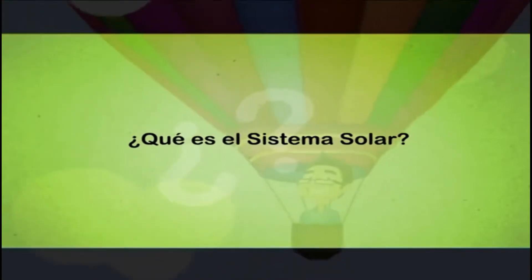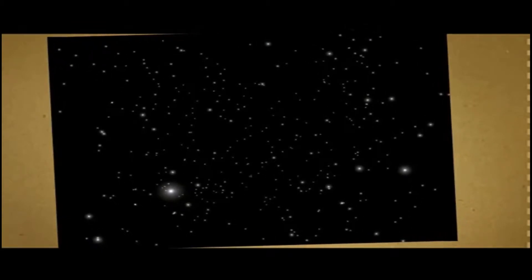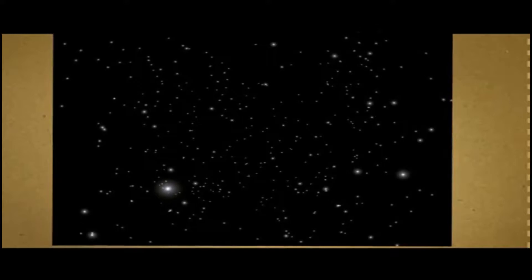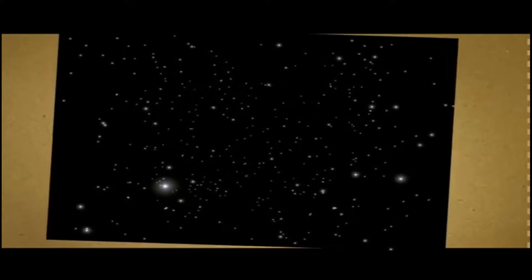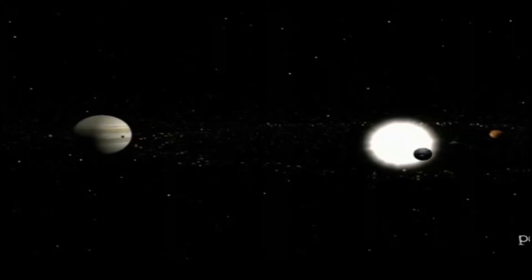¿Qué es el Sistema Solar? Cuando miramos el cielo por la noche vemos miles de astros. La mayoría son estrellas, pero también podemos ver otros astros que, con la Tierra, forman parte del Sistema Solar. El Sistema Solar está formado por el Sol y todos los astros que giran a su alrededor.